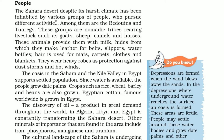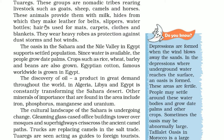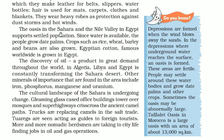The Sahara Desert, in spite of the harsh climate, has been inhabited by various groups of people. There are Bedouins and Tuaregs - nomadic tribes rearing livestock like goats, sheep, camels and horses. These animals provide them with milk; hides from which they make leather for belts, slippers and water bottles; and hair used for mats, carpets, clothes and blankets. They wear heavy robes as protection because the environment is full of dust storms and hot winds.